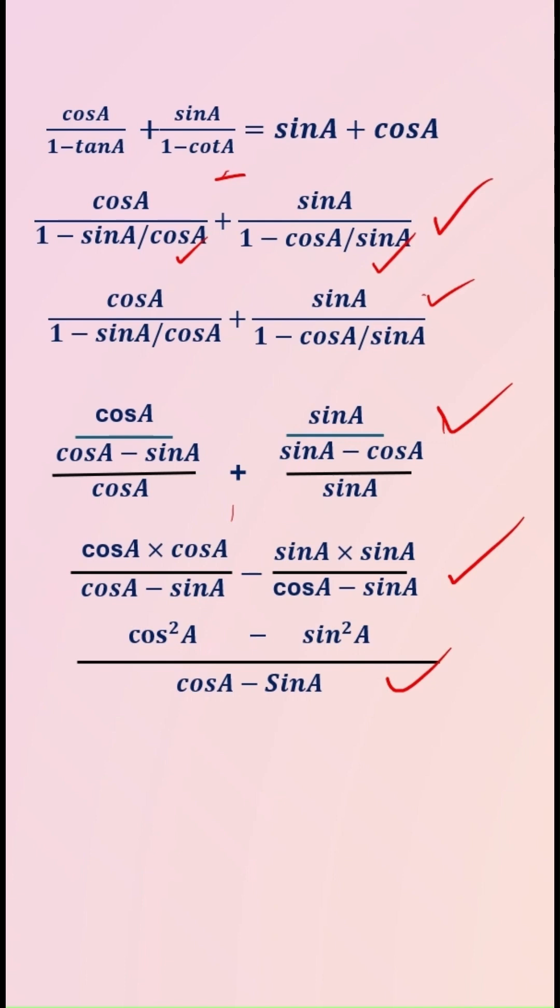A square minus B square is equal to A plus B multiplied by A minus B. So cos A plus sin A into cos A minus sin A. Cos A minus sin A cancelled out.